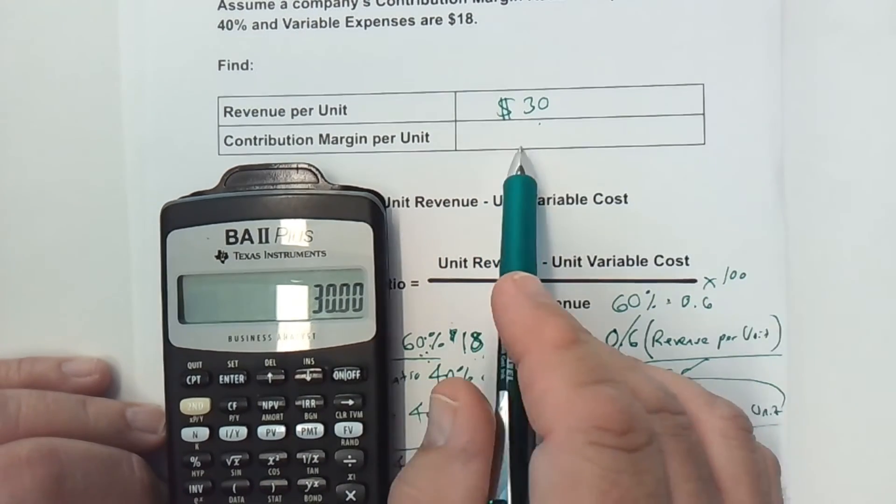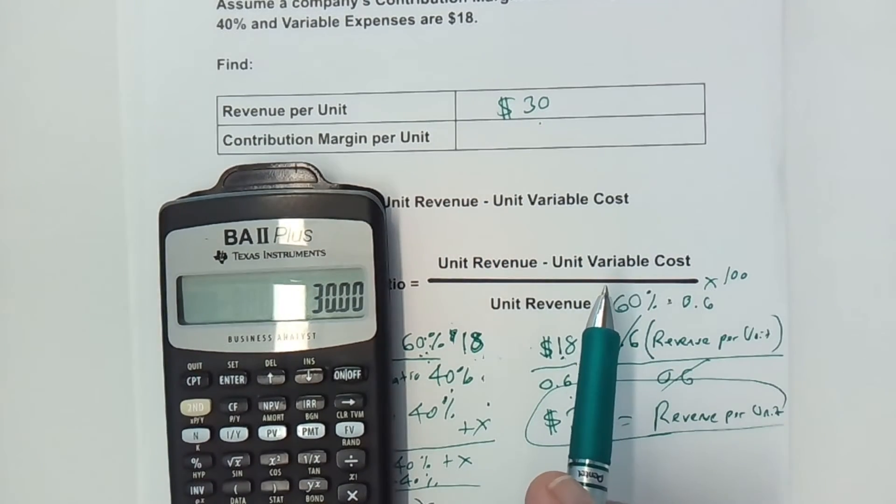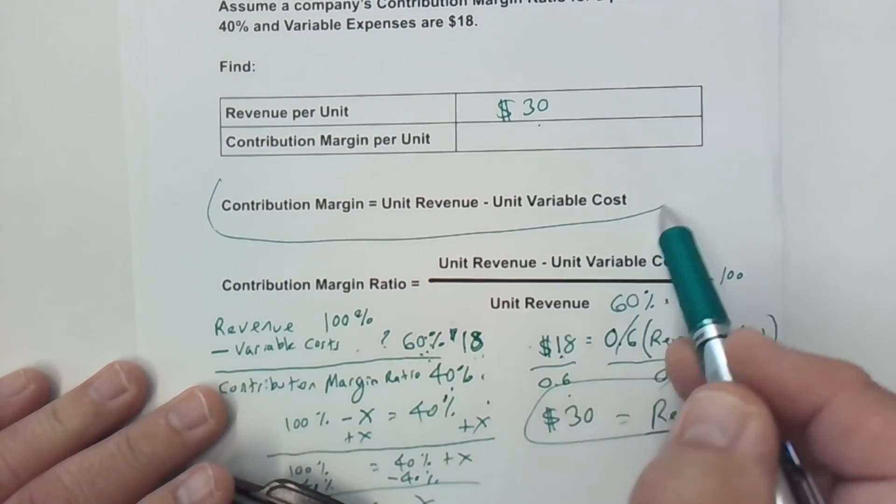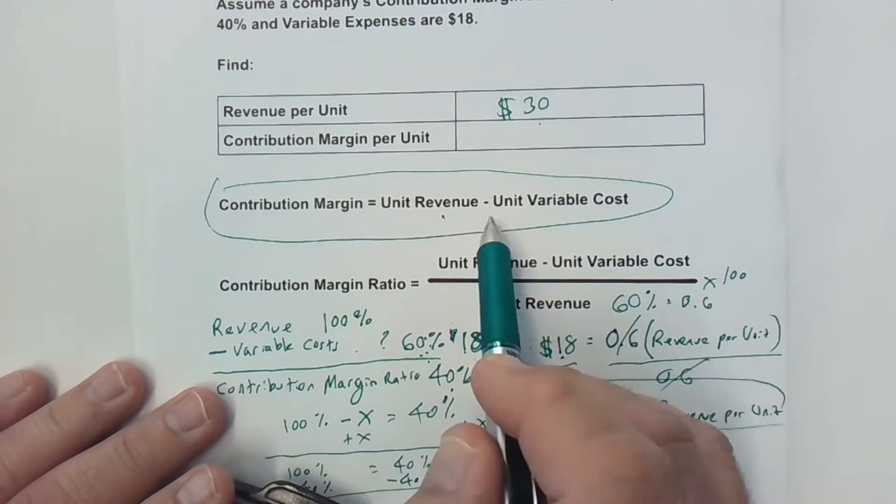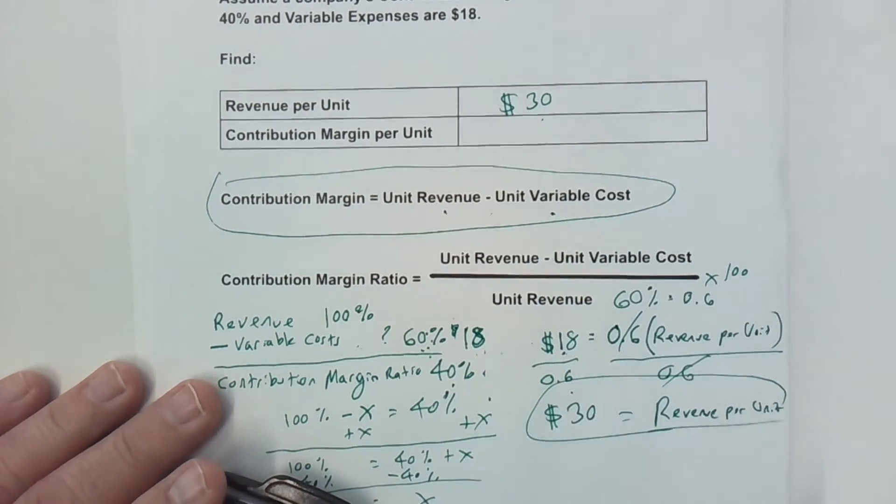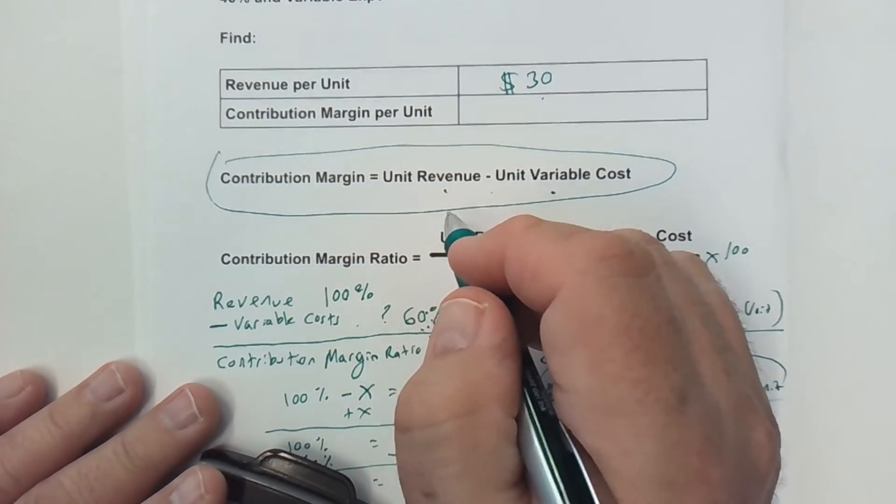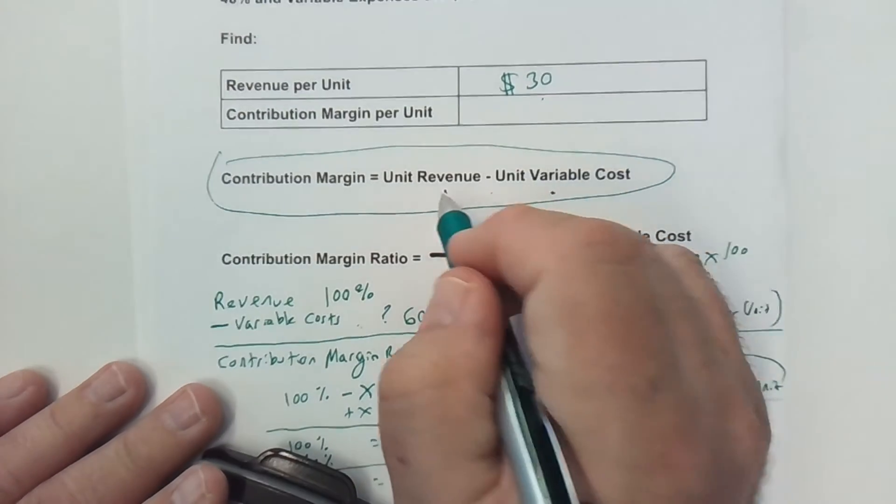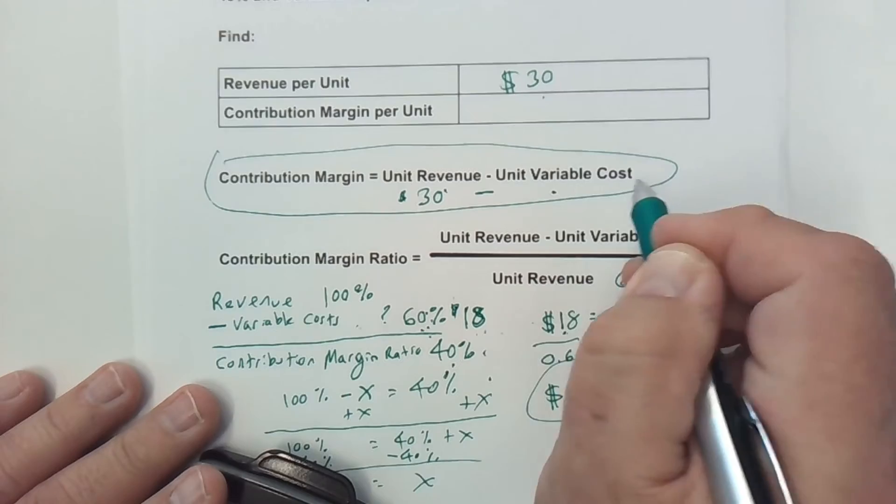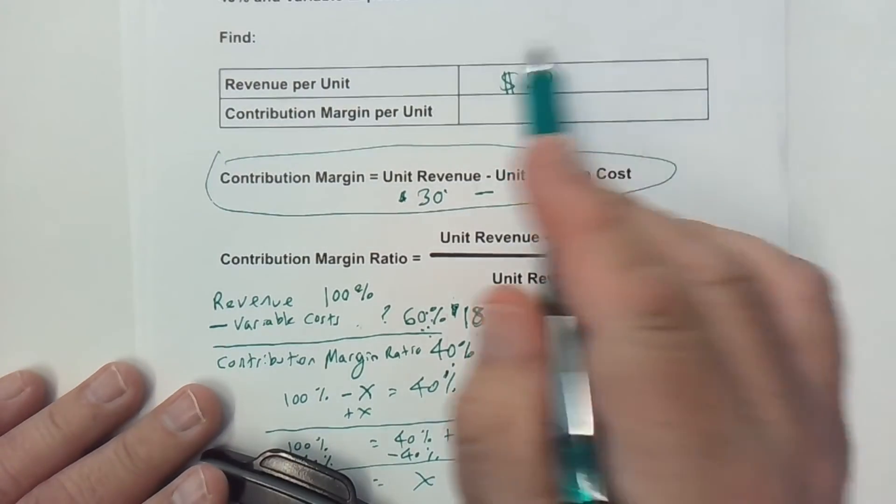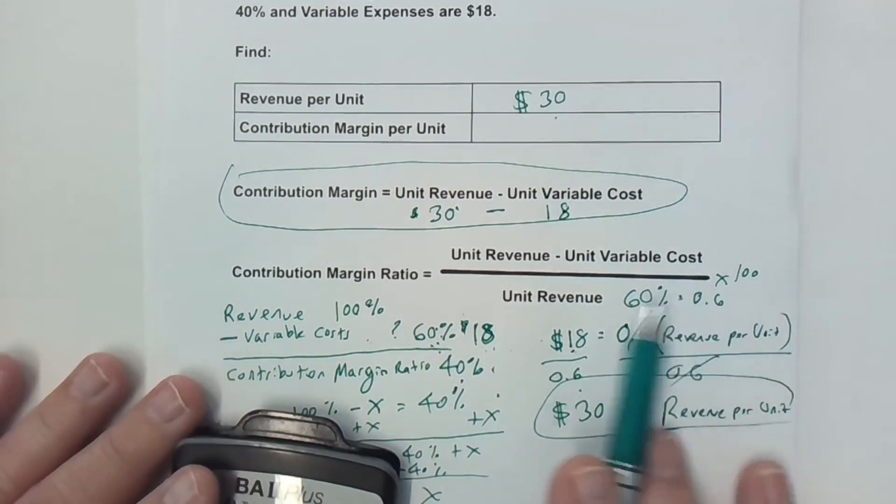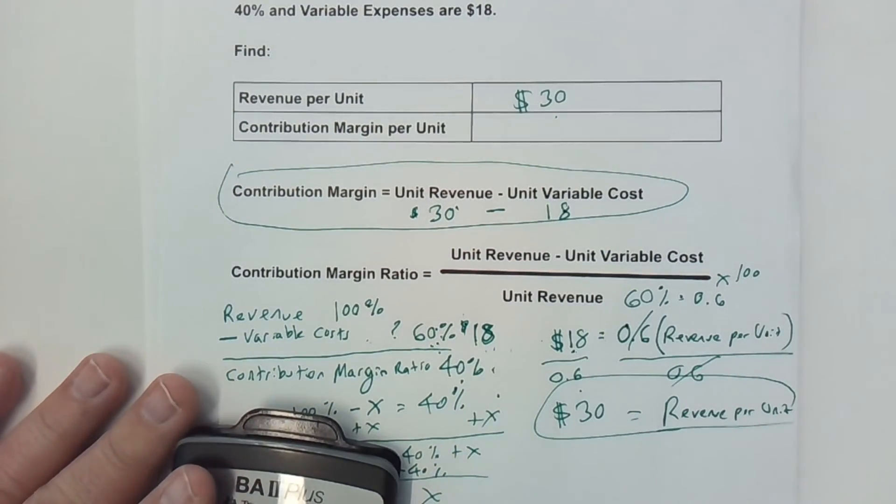Next, we need to find the contribution margin per unit. How do we find that? We look at this other formula here that tells us contribution margin is equal to unit revenue minus the variable cost. We know that the unit revenue is $30, and we know the variable cost is $18.